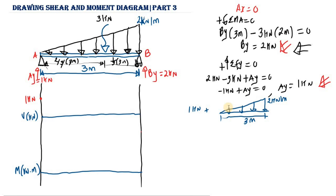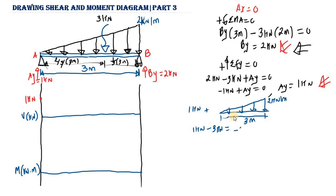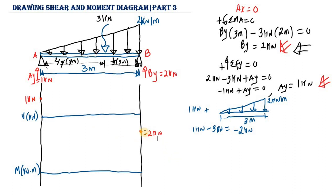Adding the distributed load area: 1 kN − 3 kN = −2 kN. So the shear value at point B (before the reaction) is −2 kN. Now we need to connect 1 kN to −2 kN. Because the load is not constant but triangular, the slope is not constant — it is not a straight line. We use a parabola to connect these two values.